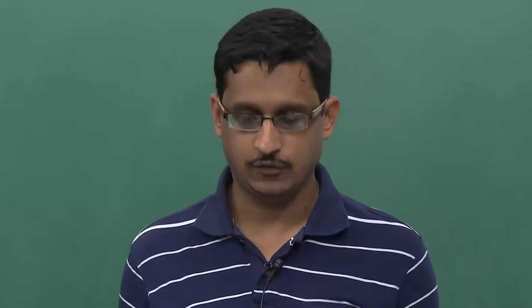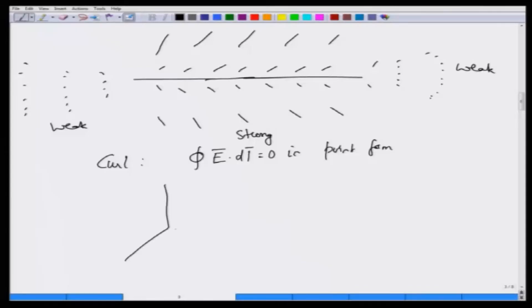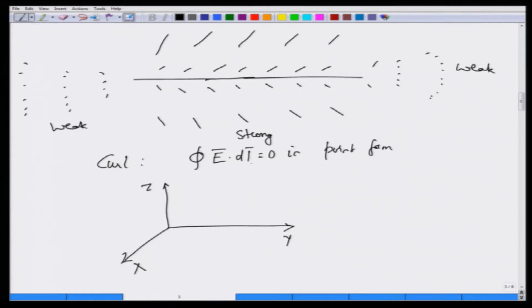Now, how do we put this in the point form? To put that in point form is slightly different from the divergence, because the curl operation is a vector operation — that is, it takes a vector as input and gives you a vector as output. So it will have three components; at least in the Cartesian coordinate system it will have three components x, y, and z, and you have to evaluate the curl of all three components by going to a certain definition.